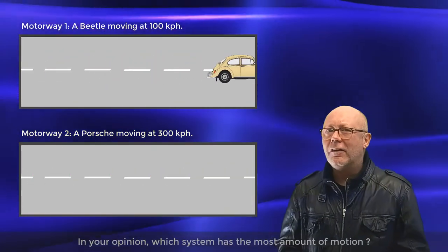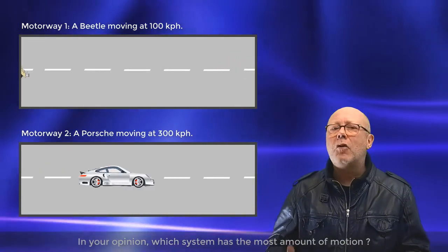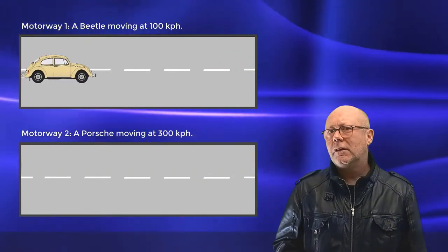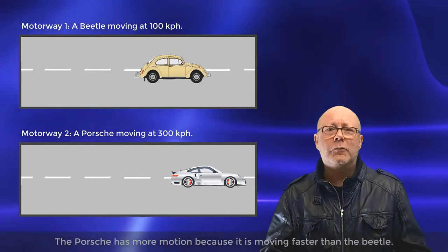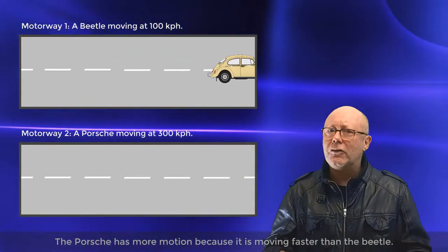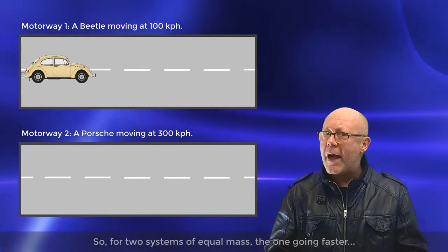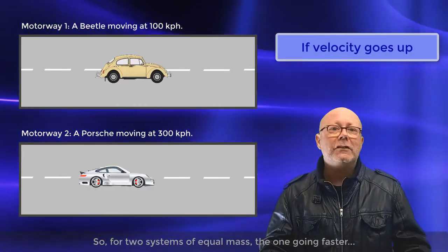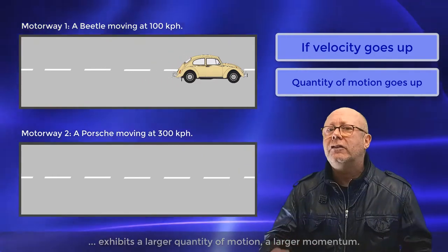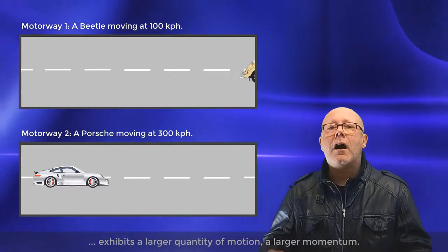In your opinion, which system has the most amount of motion? Yeah, it's obvious again. The Porsche has more motion because it is moving faster than the Beetle. So for two systems of equal mass, the one going faster exhibits a larger quantity of motion, a larger momentum.